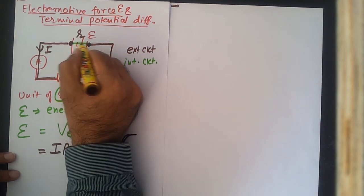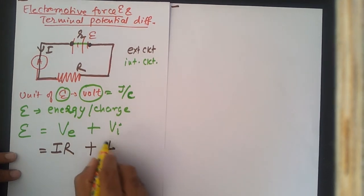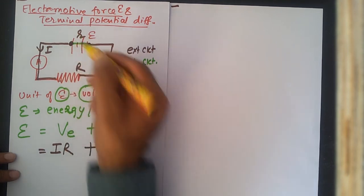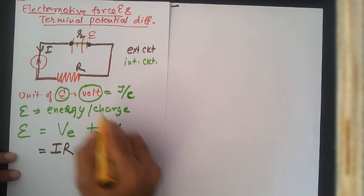Plus, what is the energy used up in the internal part? That will be current I, because current I flows into the internal circuit, and the resistance of the internal circuit is small r. So epsilon equals I into capital R plus I into small r.